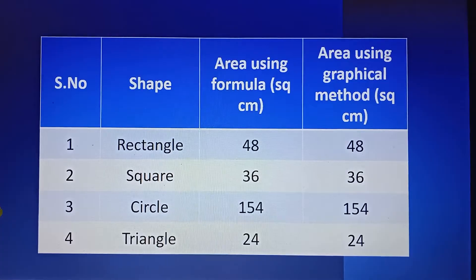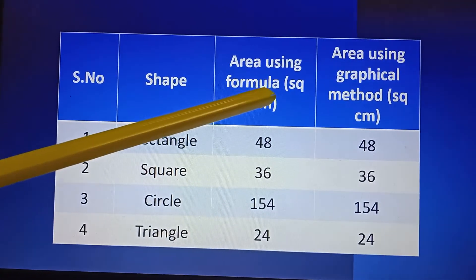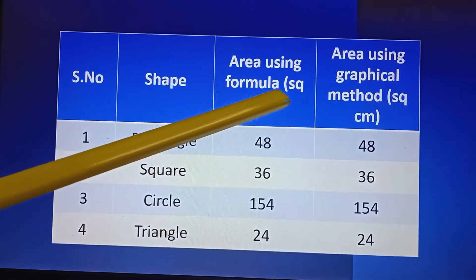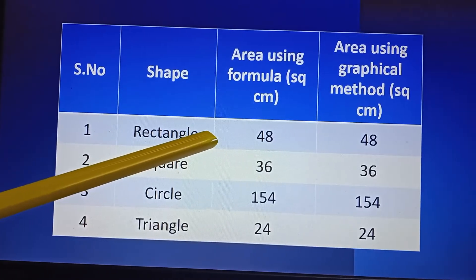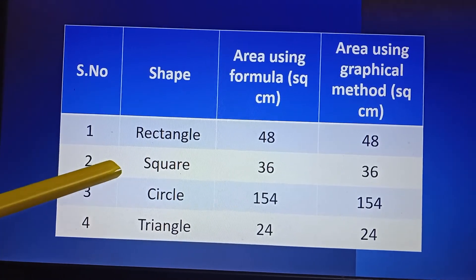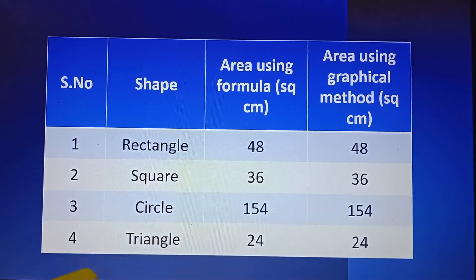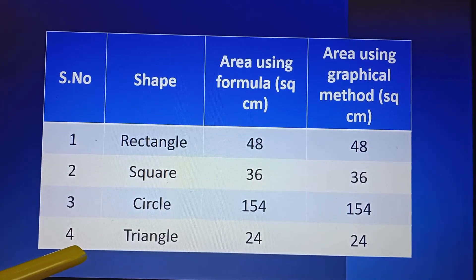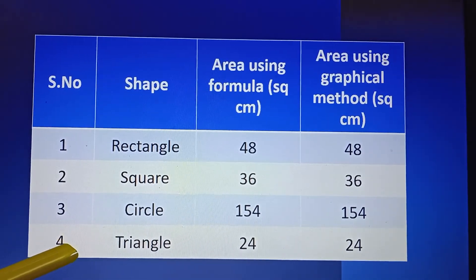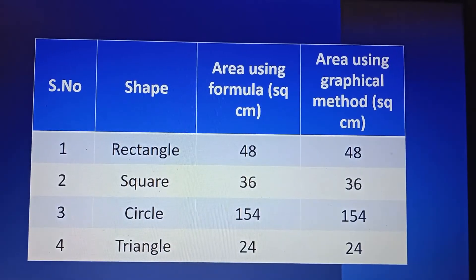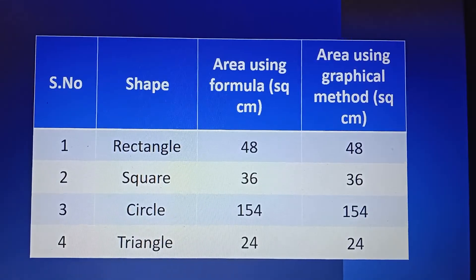By comparing the results, the area using formula and area using graphical method: rectangle — 48 square cm in both methods; square — 36 square cm; circle — 154 square cm; triangle — 24 square cm. We compared both methods and the results match. Is it clear for you all? Students, go through the video once or twice for better understanding. Thank you, students.